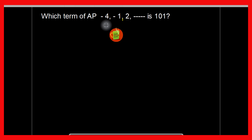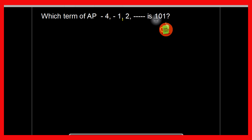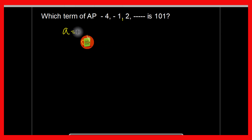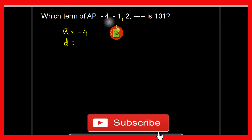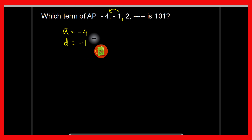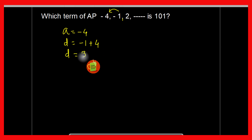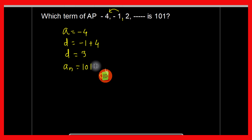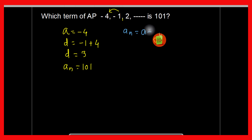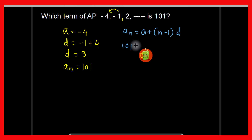Here is the next question on the screen: which term of the AP minus 4, minus 1, dash, dash is 101? We have to find which term 101 will be in this given AP. The first term a is minus 4. The common difference is the second term minus the first term: minus 1 minus minus 4 equals 3. So d equals 3, and an equals 101. We apply the formula: an equals a plus n minus 1 into d.